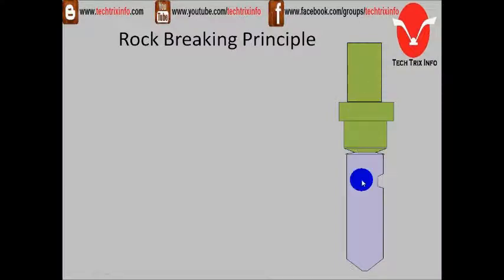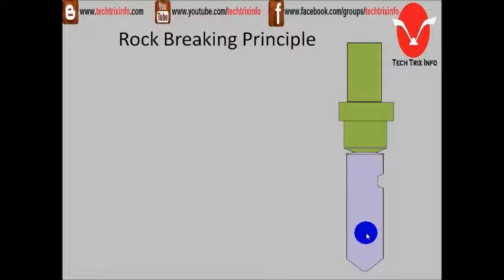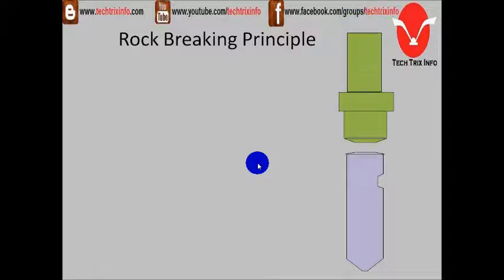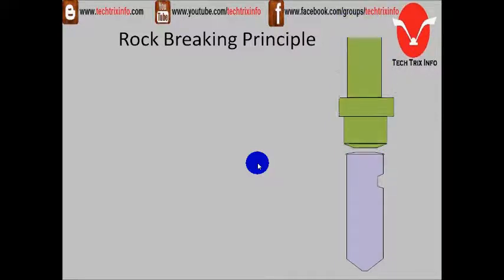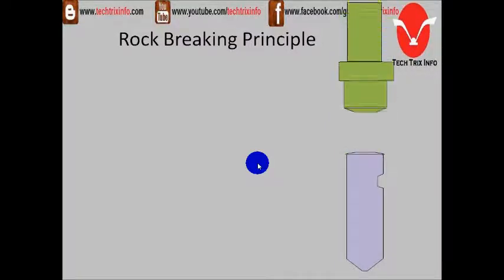The piston comes and hits the tool, which results in an impact and vibration. This tool will be engaged on a rock beneath, which will result in a breaking. This is how a rock breaker basically works.